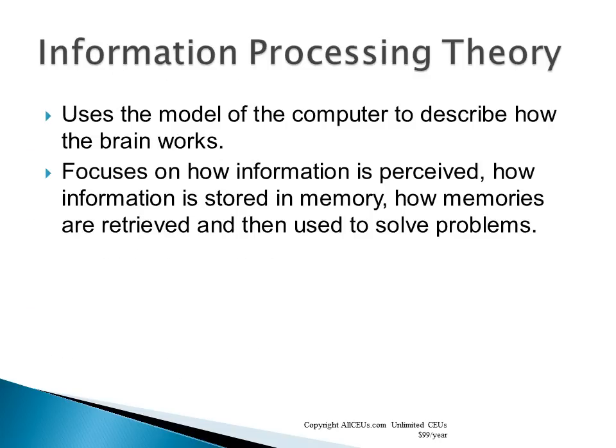Information processing theories use the model of the computer to describe how the brain works, focusing on how information is perceived, stored in memory, retrieved, and used to solve problems. One key insight is that strengthening neural connections creates multiple ways to access information — visual, auditory, smell, kinesthetic — similar to saving a file and creating shortcuts in multiple places on a computer.